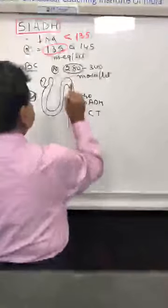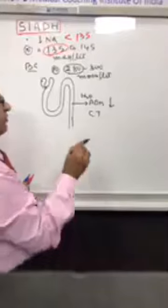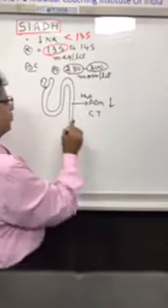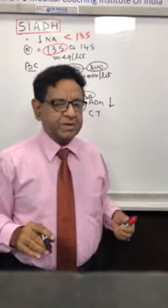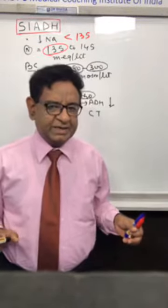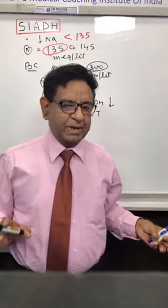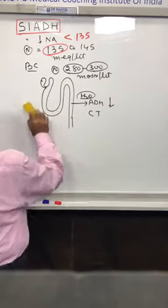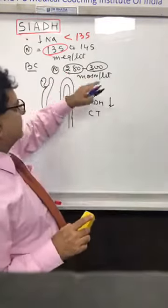If osmolality is around 280, less ADH is secreted so more water goes out. But if osmolality is 300, more ADH is released and more water is absorbed. In short, ADH secretion is dependent on plasma osmolality: less osmolality means less ADH, more osmolality means more ADH, and ultimately it maintains normal plasma osmolality. The carry-home message is ADH absorbs only pure water and its secretion depends on plasma osmolality.